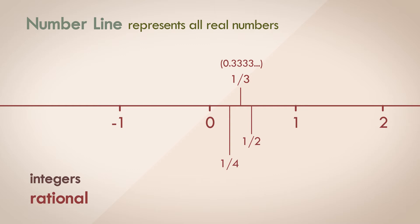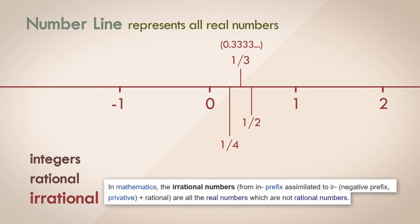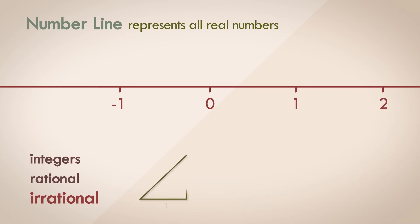Moving on, real numbers can also be irrational. What are irrational numbers? Well, according to Wikipedia, they are real numbers which aren't rational. Beautiful. Well, there are numbers like the square root of 2, which is 1.41421 and so on, or the value of pi, which is 3.14159 and so on.